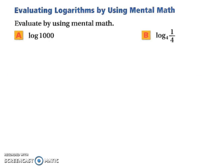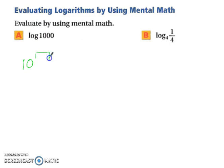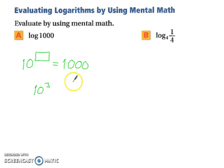Let's try evaluating logarithms using mental math. When there is no base written for a log, it is assumed that the base is 10. So if there's no base written, it's assumed to be 10. You can think in your head: 10 to the 3rd gives us 1,000, so therefore log base 10 of 1,000 must equal 3.